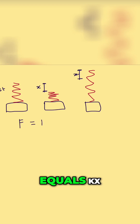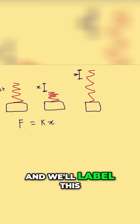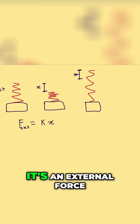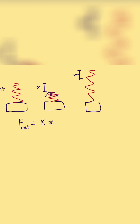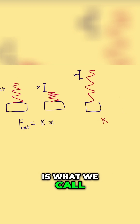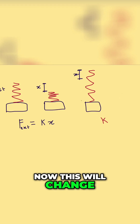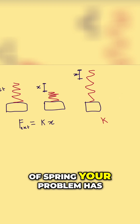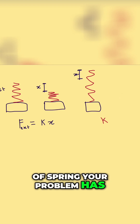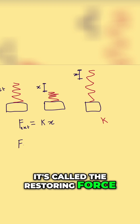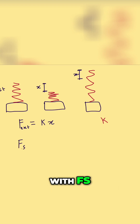The force required to hold the spring at position x away from its normal length is given by F = kx. We label this F_ext, which means it's an external force being applied. k is what we call the spring stiffness constant, and this will change depending on the type of spring in your problem.